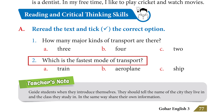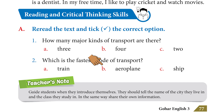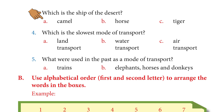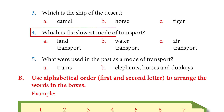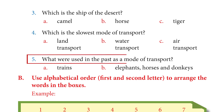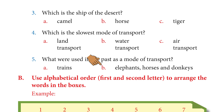Which is the fastest mode of transport? Yes, option B — aeroplane. Which is the ship of the desert? Obviously, option A — camel. Which is the slowest mode of transport? For land transport, we will tick that option. What were used in the past as a mode of transport? We will check options B and A — elephant, horses, and donkeys.